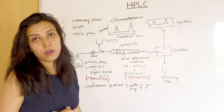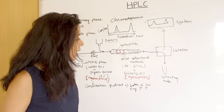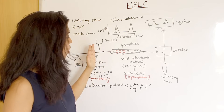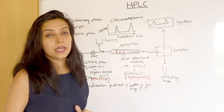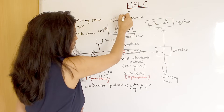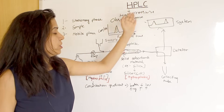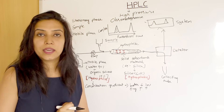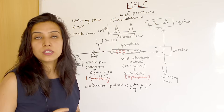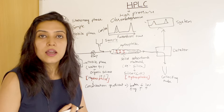In normal column chromatography, molecules pass through the column due to gravitational force. But in HPLC, we apply high pressure to push the molecules through the column. This is why HPLC can also be called High Pressure Liquid Chromatography — because high pressure is applied to pass through the column. The silica used here is modified silica and it is very small in size, so for proper purification, high pressure is applied.